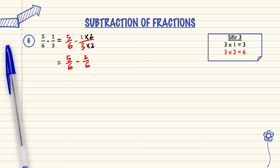Now the denominator is the same. So we can subtract the numerator: 5 minus 2 equals 3 over 6.